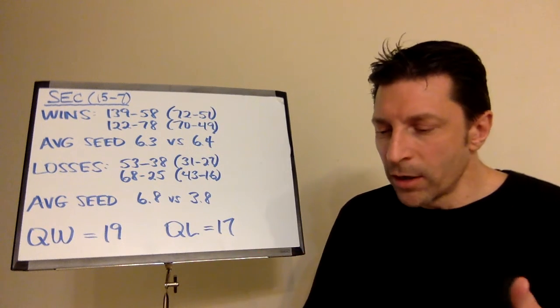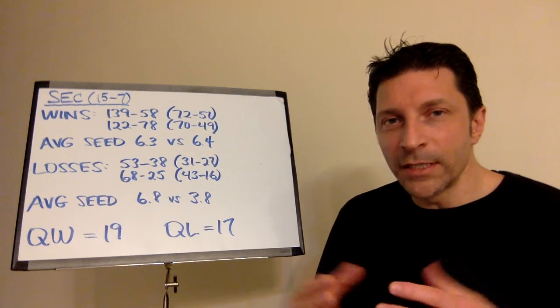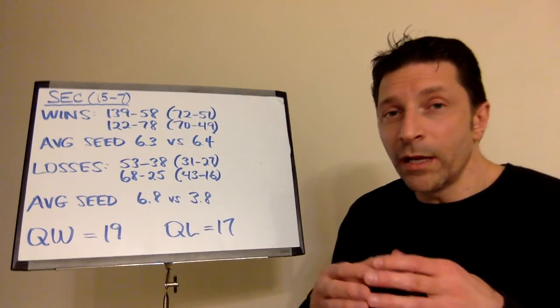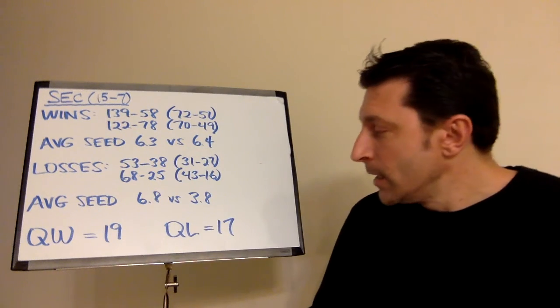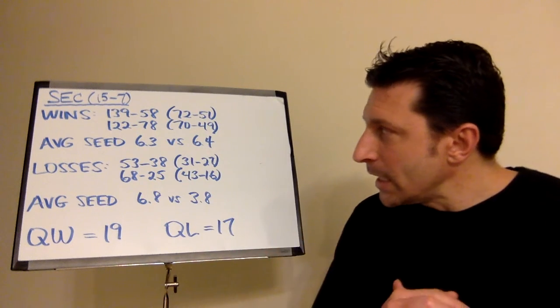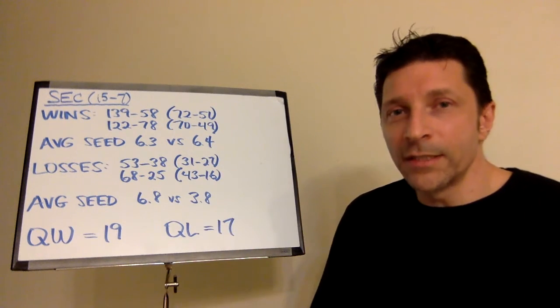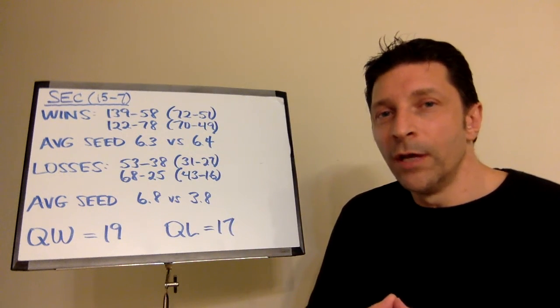Worst loss, again, Arkansas, Texas Tech. And we adjusted all the seedings for the wins and losses on down the line. So, what we have is the average quality of win for the SEC is 19. Average quality of loss is 17. And then we'll multiply it by 15 for the wins and 7 for the losses to give you a final point total that we will compare.